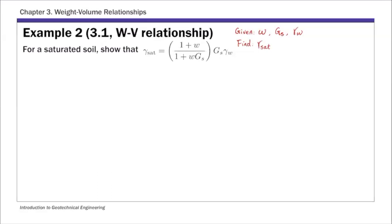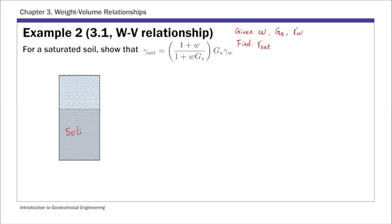For this example, this is a saturated soil, so I'm going to draw the phase diagram first. In this phase diagram, we have two phases: solids and water. And again, we have the weight side and the volume side.